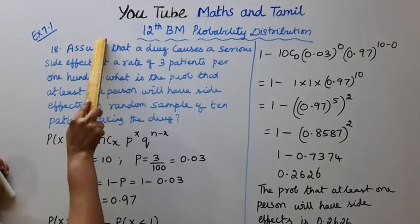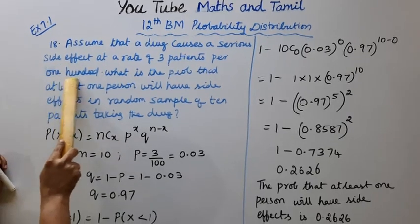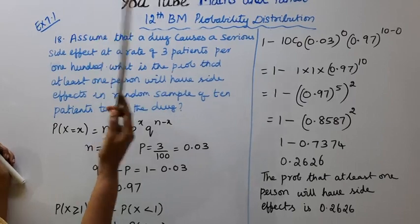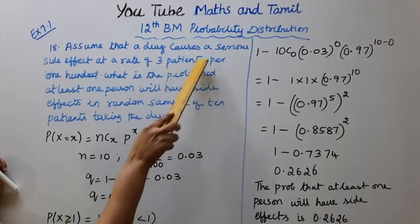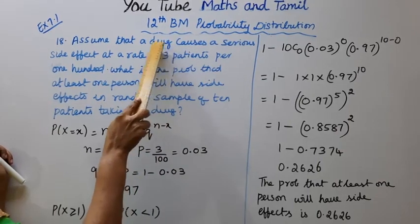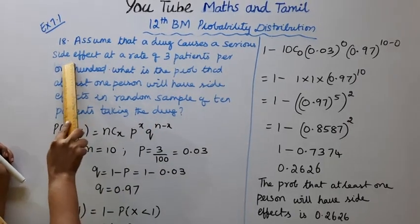In the assume that 100 patients, one hundred patients could drug, one person to get that drug, that is 3 patients causes a serious side effect.